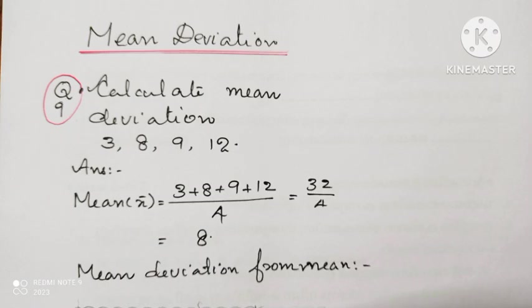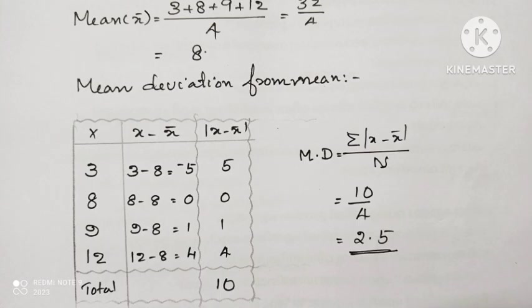Calculate mean deviation of 3, 8, 9 and 12. Mean deviation is equal to sigma modulus of x minus x bar divided by n. x bar is equal to mean. Mean is equal to sum of the observation divided by total number of observation. Therefore, the answer is 8.